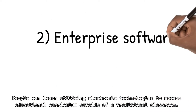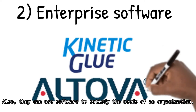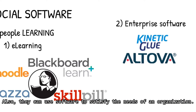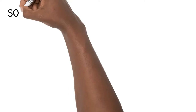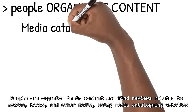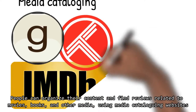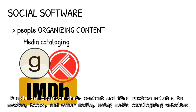People can learn using electronic technologies to access educational curriculum outside of a traditional classroom. Also, they can use software to satisfy the needs of an organization. People can organize their content and find reviews related to movies, books, and other media using media cataloging websites.